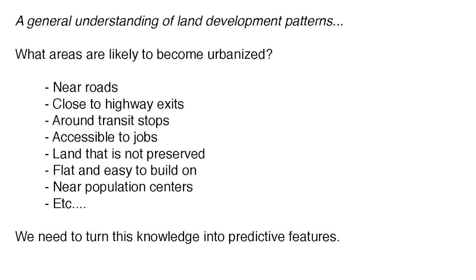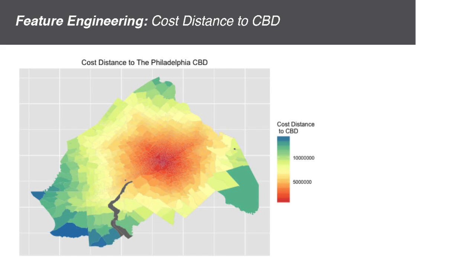As planners, we have a general theoretical understanding of what land will become urbanized. We can guess that it will be near infrastructure like transit and roads, that it will be accessible to jobs and other population centers, and that it will be unbuildable land. The challenge of this modeling process is to turn this knowledge into variables that we test on past urbanization, and therefore know to be predictive of future development.